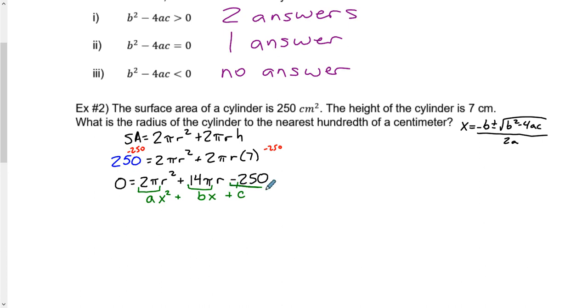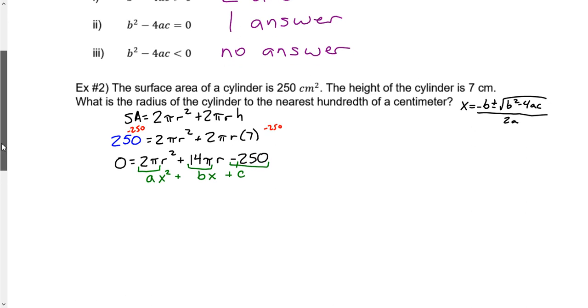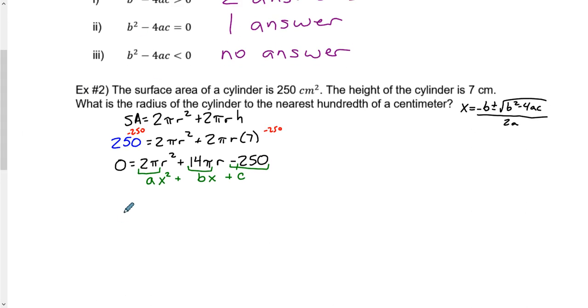Negative 250 is our c value. I have to be very specific with that. So when we plug it into the quadratic formula, x, or in this case we're not solving for x, we're solving for r. r is negative b, so b is 14π. So negative 14π, plus or minus the square root.